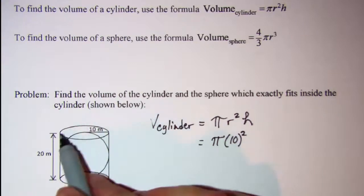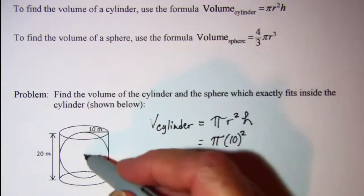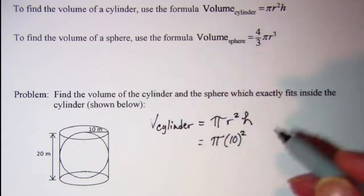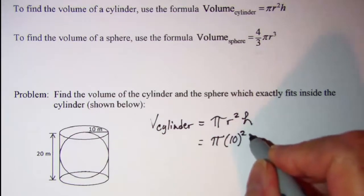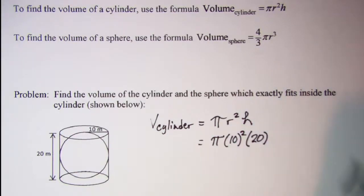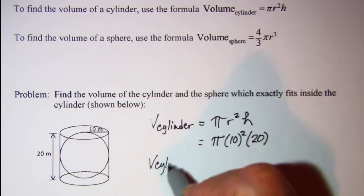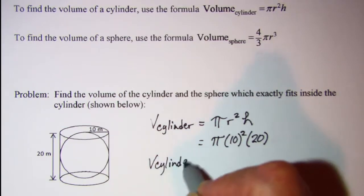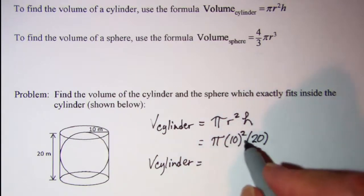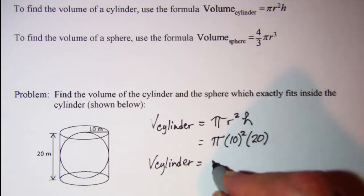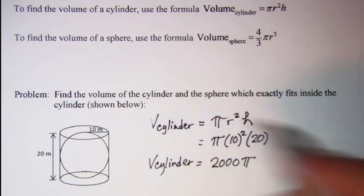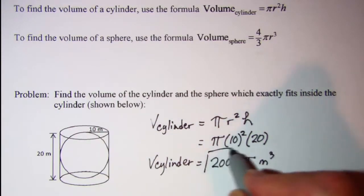And h is 20, or two radiuses which is one diameter, so our height is 20. So the volume of our cylinder is, this is 100 times 20, so 2000 pi, and it's in meters so meters cubed. Remember volume is cubic units.